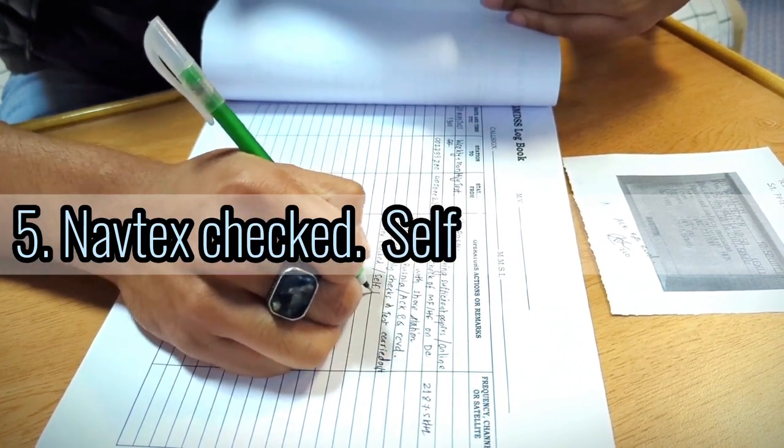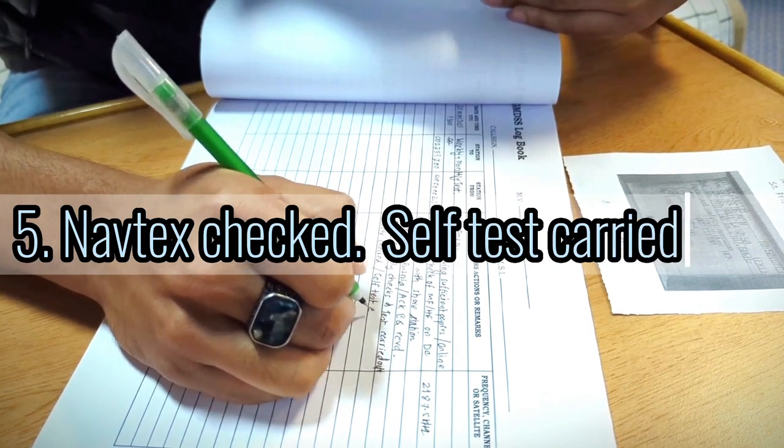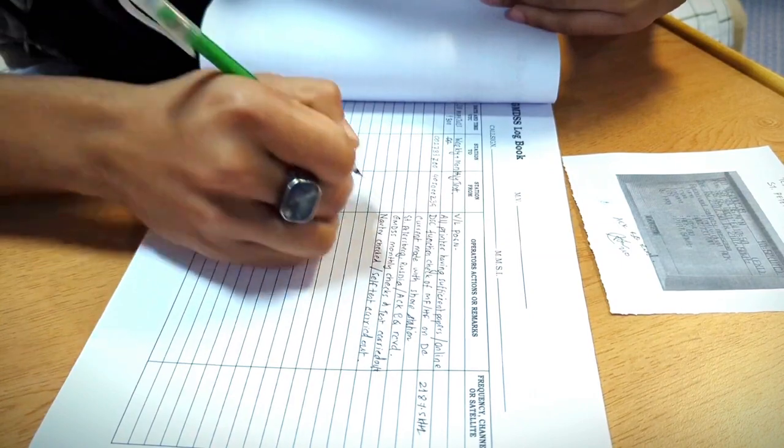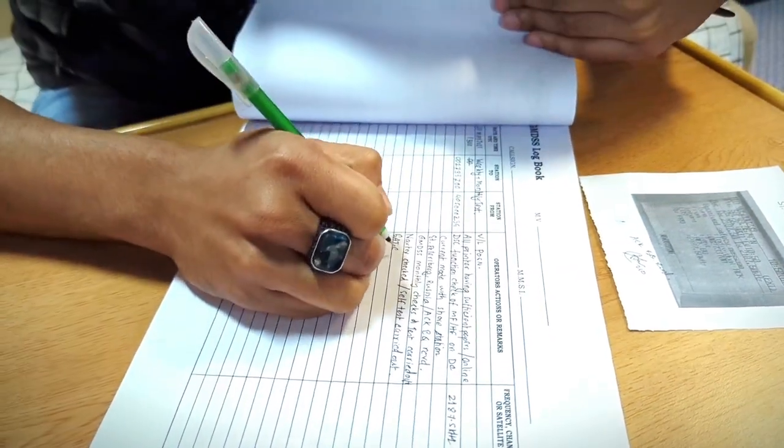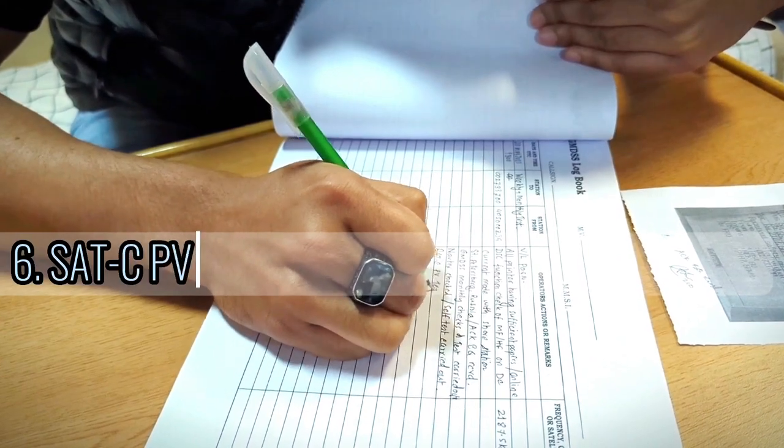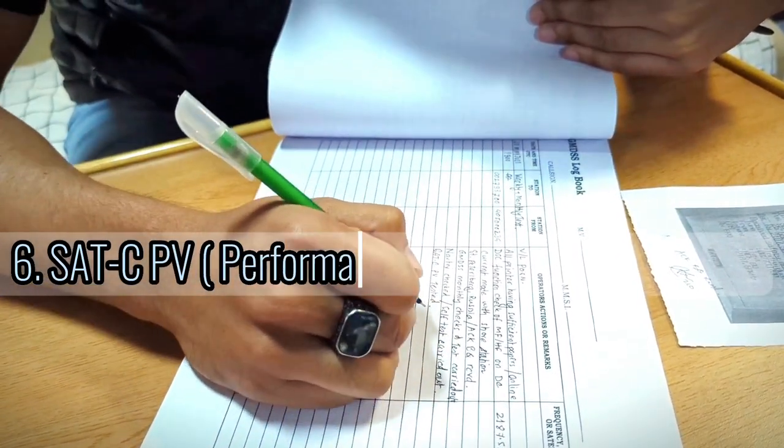Then self test carried out. And next one, Set C PV tested. PV is performance verification.